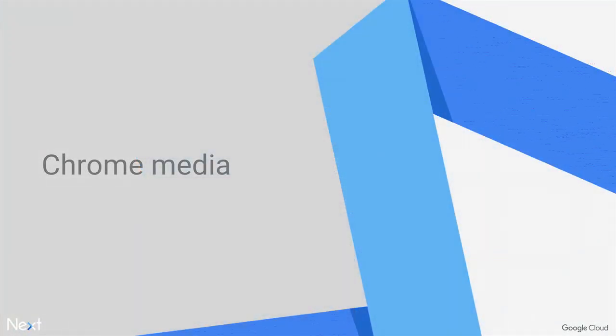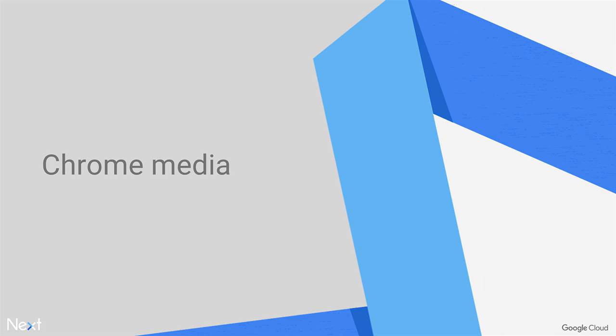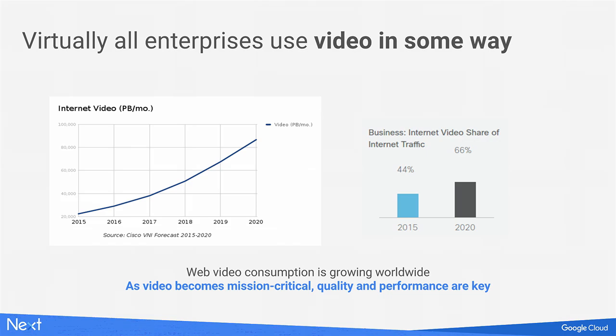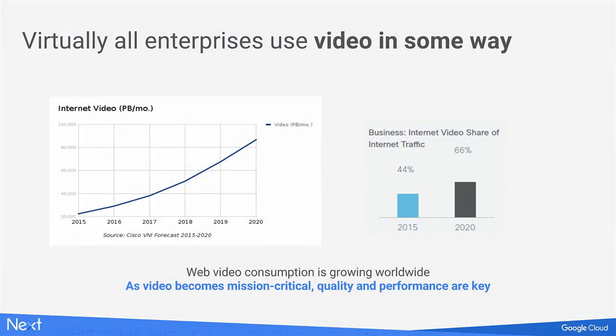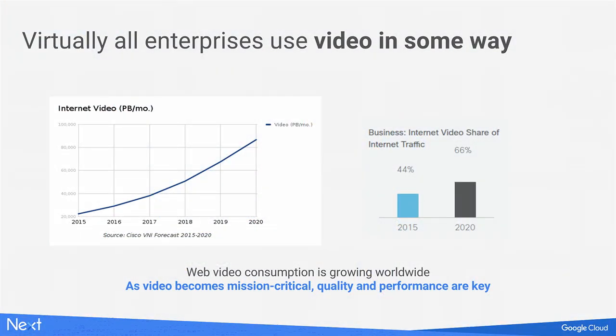We've also made large improvements on bandwidth usage for media. Companies use media in many ways — video conferencing, news, social media which are increasingly video-based, and even internal communications such as training videos and company updates are now shifting to streaming video to enable access for employees across multiple locations. Chrome has extensive support for WebRTC for video conferencing, and we are working hard to improve video codecs to decrease bandwidth usage while maintaining the same video quality. To give you a sense of the scale, there are thousands of years of video played in Chrome every day.